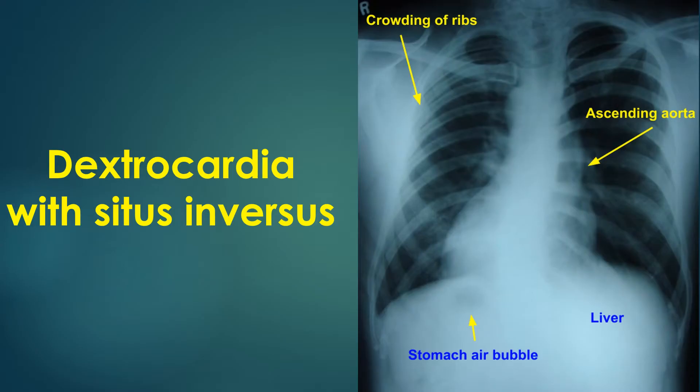Dextrocardia is evident as the apex is pointing to the right and the right atrial contour is seen on the left side. The gastric air bubble is on the right, below the diaphragm, and liver shadow on the left, indicating situs inversus. The ascending aortic shadow on the left is a little prominent.